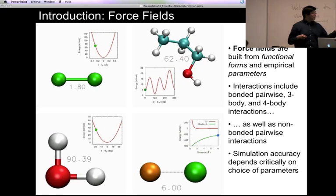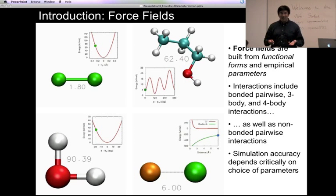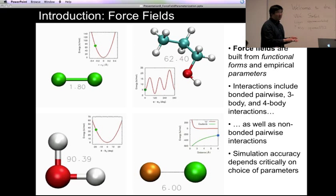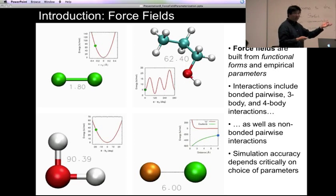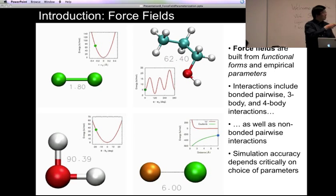The accuracy of your simulation depends critically on your choice of parameters, because there is no underlying Schrödinger's equation to approximate. You can really write down any equation you want, and if you want your simulation to reflect reality, you better choose a good set of parameters.